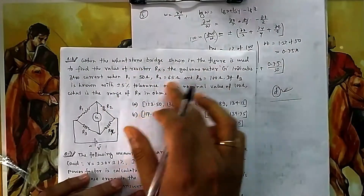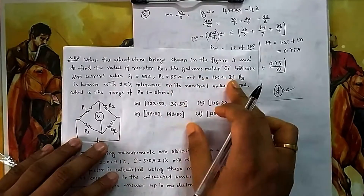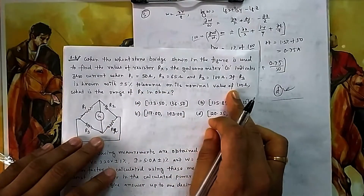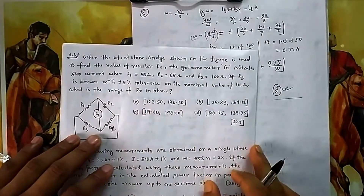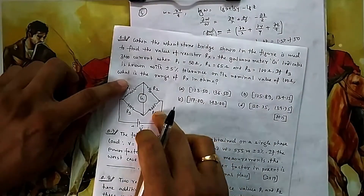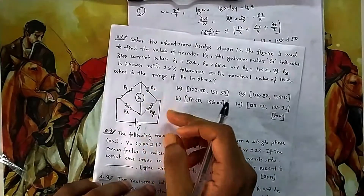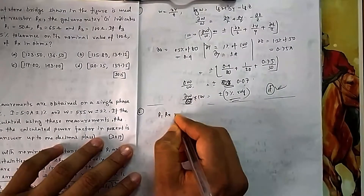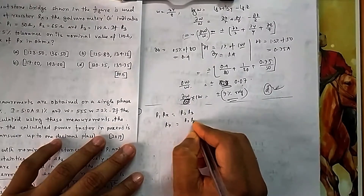In question number six, a Wheatstone bridge shown in the figure is used to find the resistor Rx. The galvanometer G indicates zero current. When this happens, R3 is known with five percent tolerance on its nominal value of 100 ohms. The balance condition is: R1 × Rx = R2 × R3, which means Rx = R2 × R3 / R1.